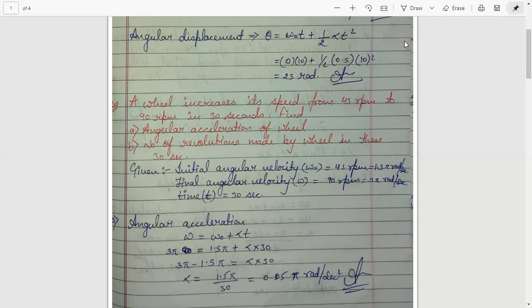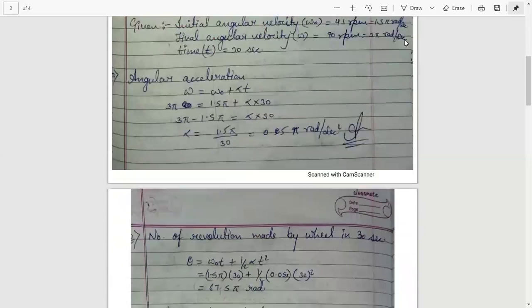Time t equals to 30 seconds. To find angular acceleration, we use the formula omega equals to omega-0 plus alpha-t, and putting all the values, alpha equals to 0.05 pi radian per second square.